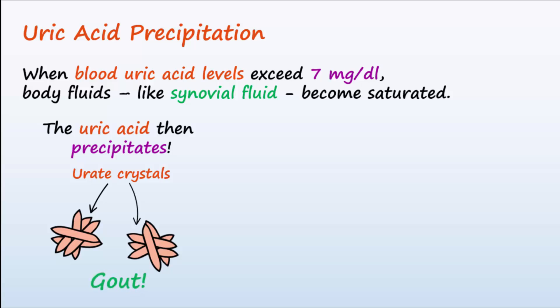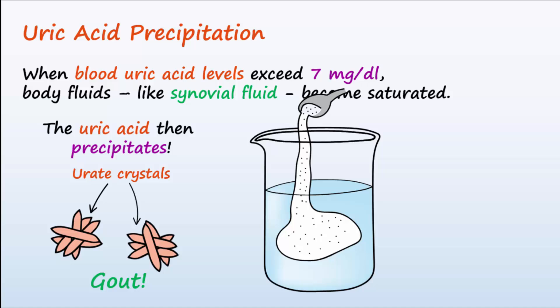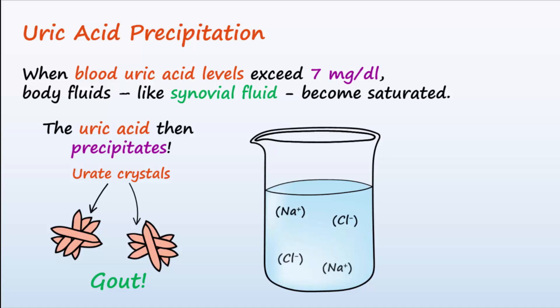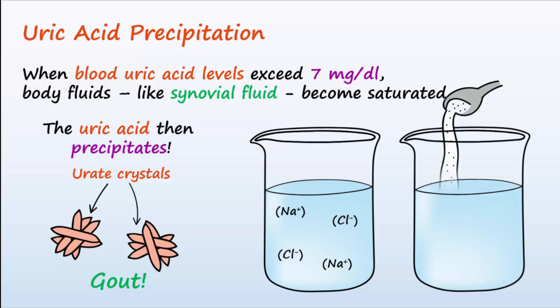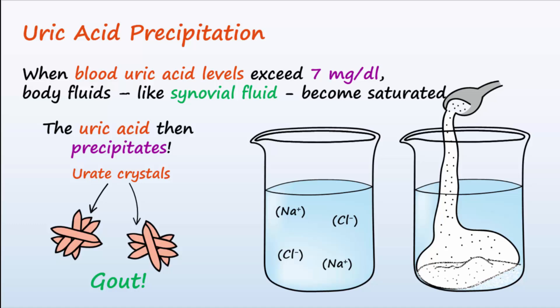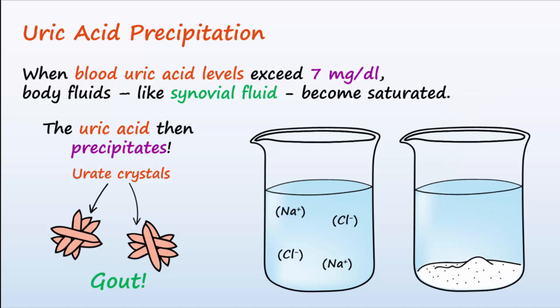Imagine getting 100 mL or so of water and adding a teaspoon of salt to it and then mixing it. Eventually the salt dissolves as it dissociates into sodium and chloride ions. However, if you added excessive amounts of salt to the water even after mixing it, you would still see solid salt in solution. This is because there simply isn't enough solvent to dissolve all the salt crystals. The same principle applies to fluids of the body. If there is too much uric acid in synovial fluid, the uric acid will tend to precipitate to form uric crystals.